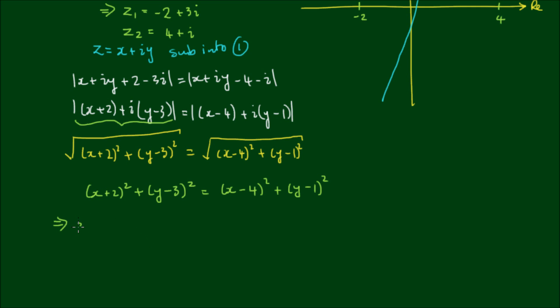But let's persist with it so I get x² + 4x + 4 + y² - 6y + 9 = x² - 8x + 16 + y² - 2y + 1.